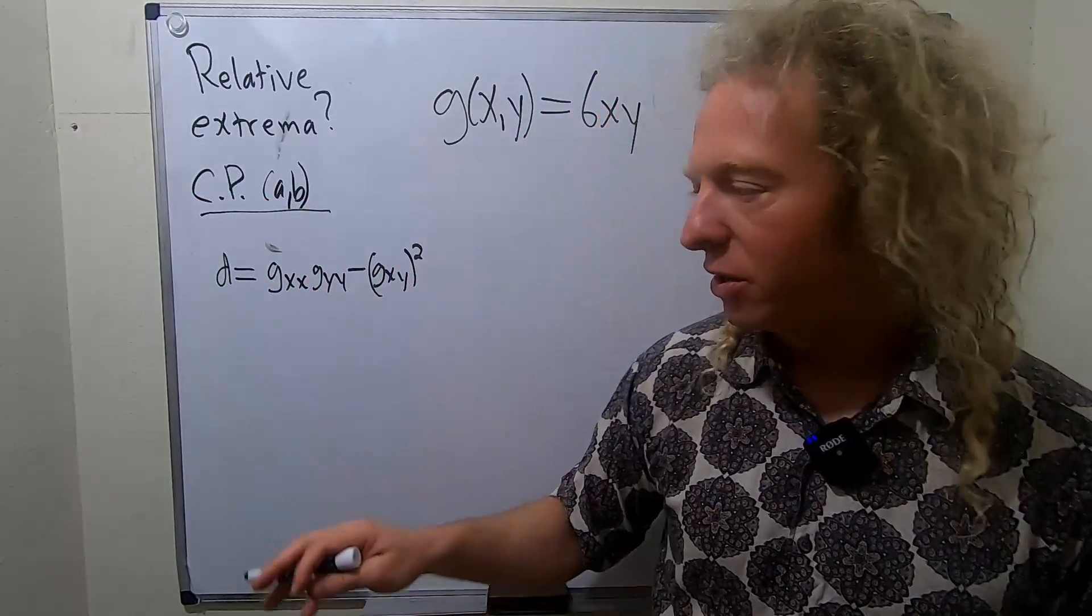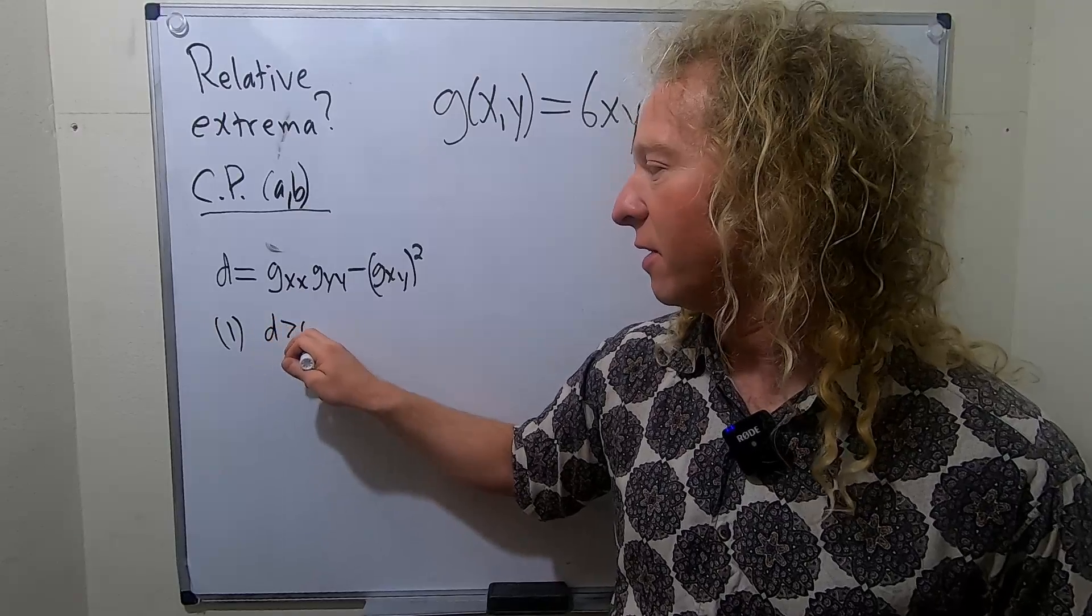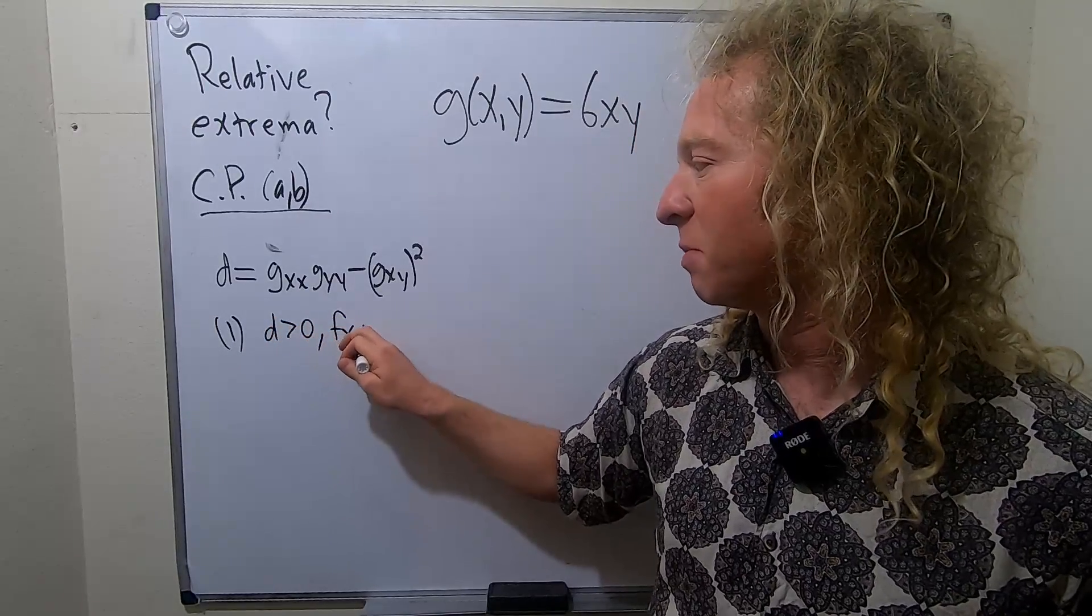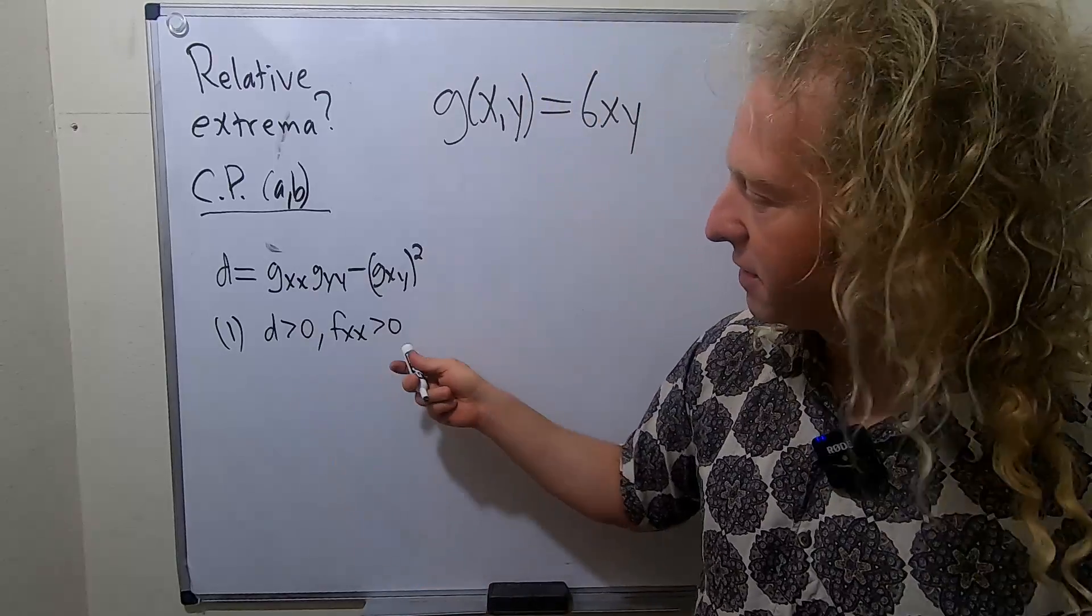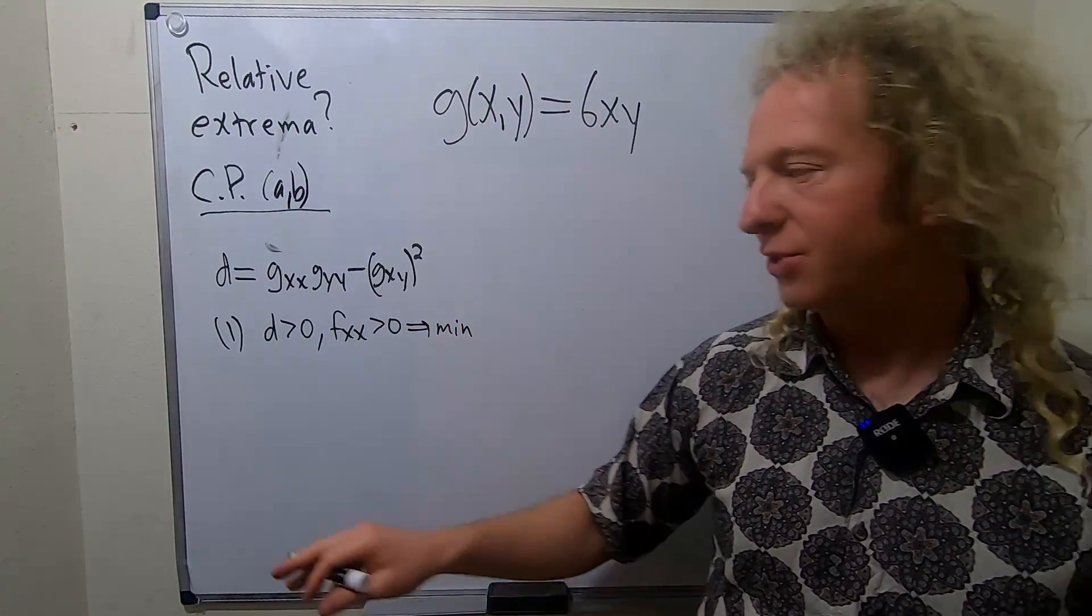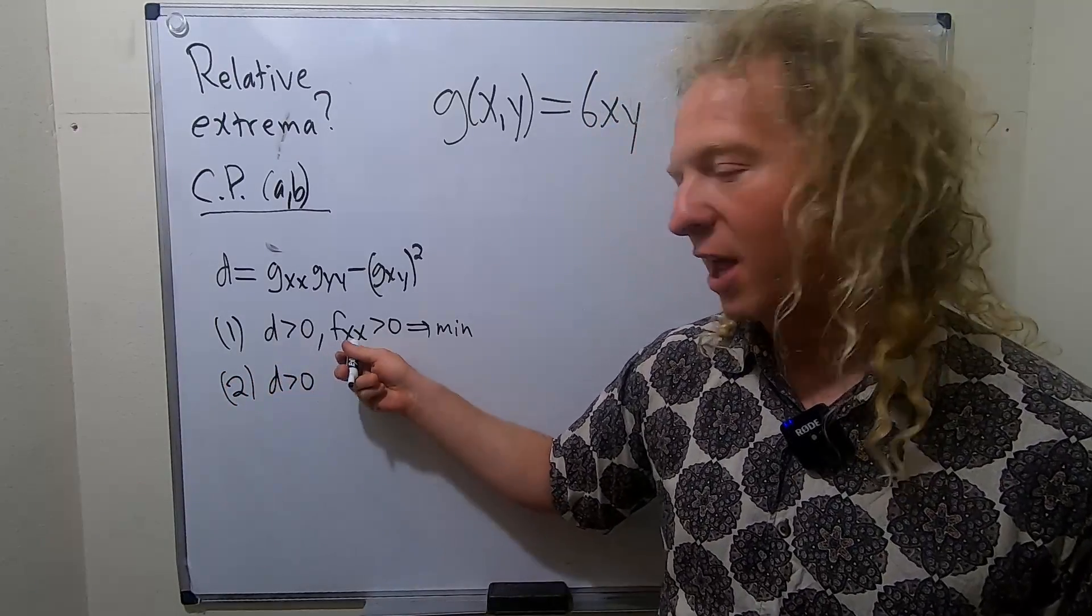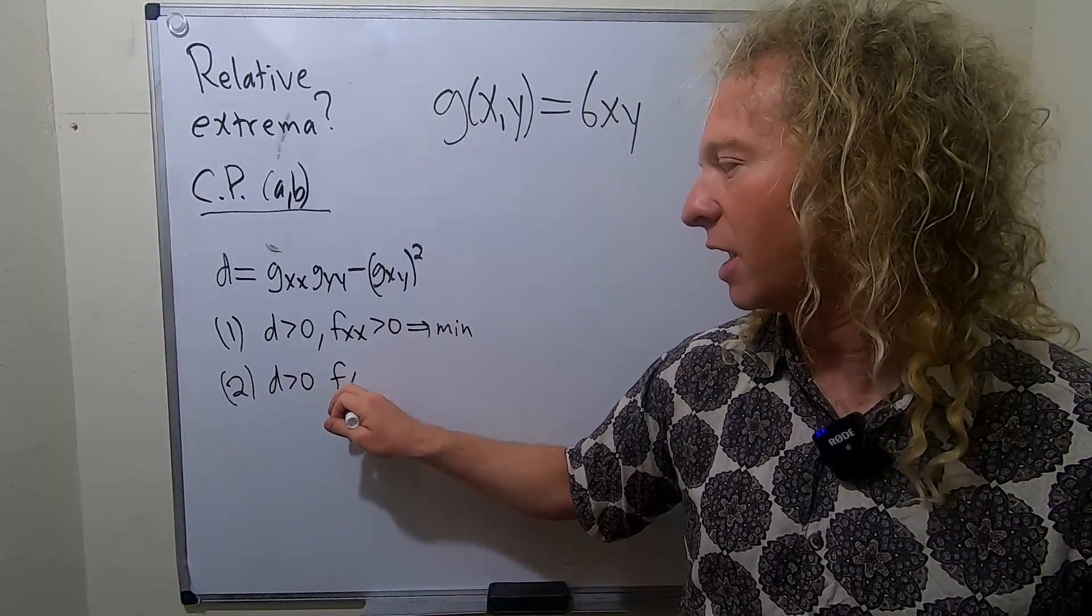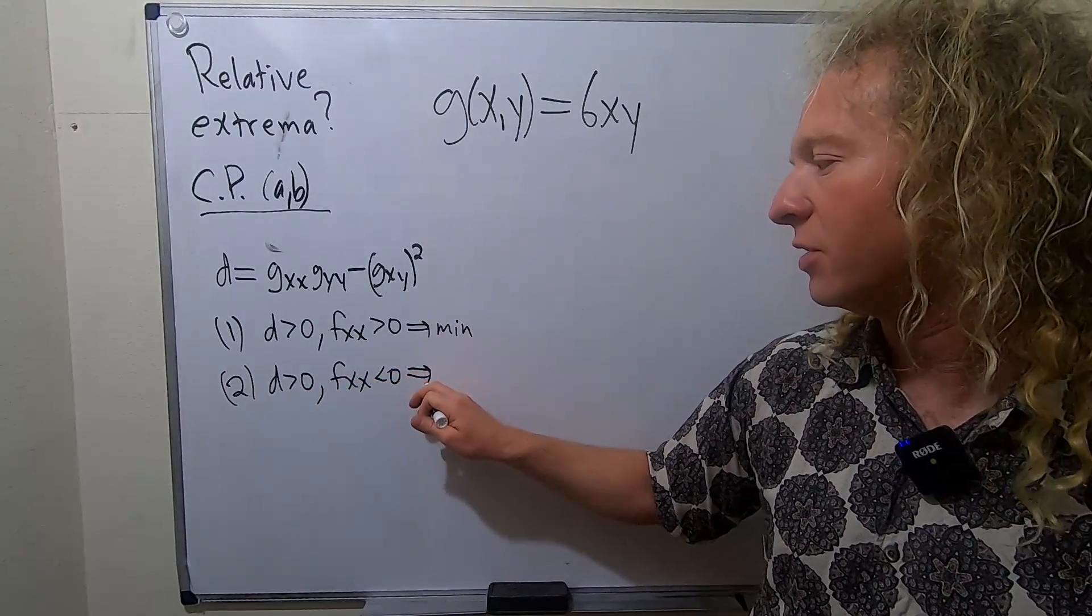And you have a couple different cases. Case one is if it's positive and FXX is positive. And again, all of this is happening at your critical point. If this happens, you have a min. Case two, if D is positive and this is negative, and again, all of this is happening at your critical point, then in this case you have a max.